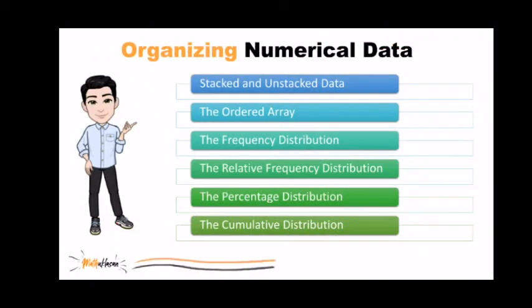How about when we have a set of numerical data? We organize them by creating ordered arrays or distributions. As usual, the amount of data you have and what you seek to discover about your variables influences which methods you choose. We can organize data using stacked and unstacked data, ordered array, frequency distribution, the relative frequency distribution, the percentage distribution, and the cumulative distribution.